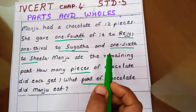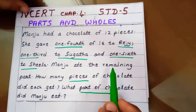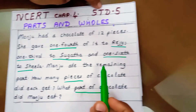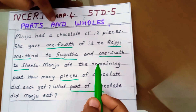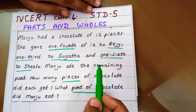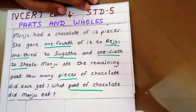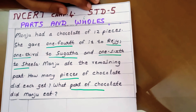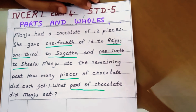Hi kids. Today I am going to do some problems. NCERT Syllabus Standard 5, Chapter 4. Its name comes like this: Parts and Wholes. Myself Femi Bijoy. Parts and Wholes means the chapter's name is Fraction. Fraction is the name of this chapter.